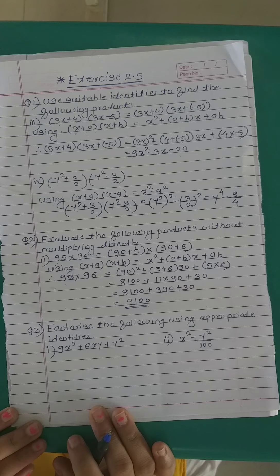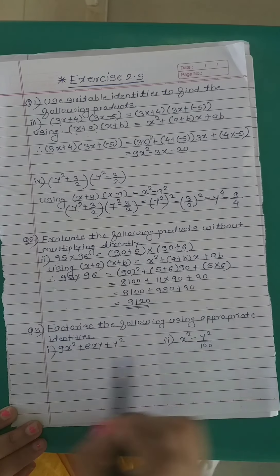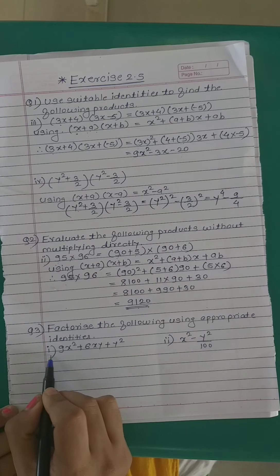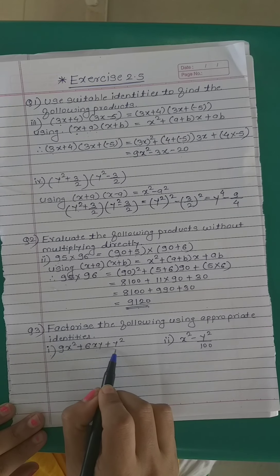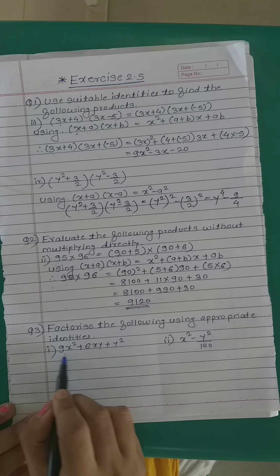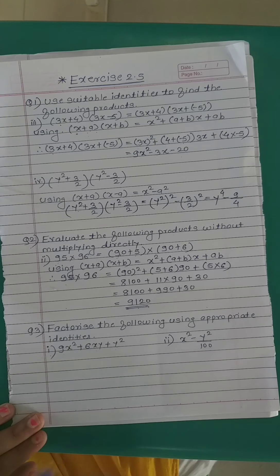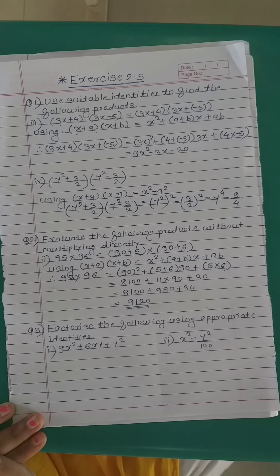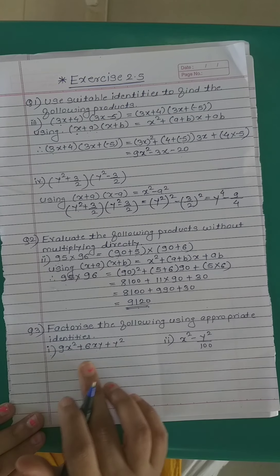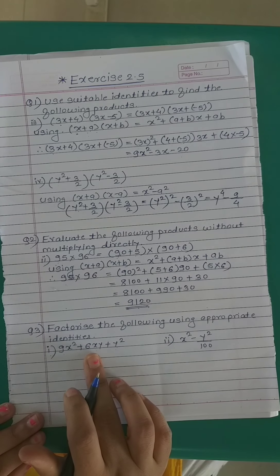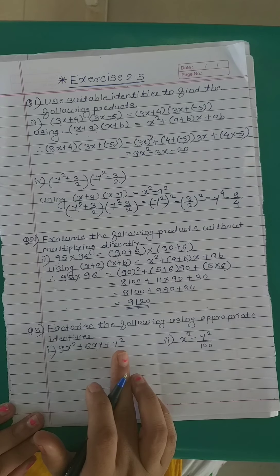Now factorize the following using appropriate identities. The first example is 9x² + 6xy + y². Here there is an algebraic expression and we have to factorize it. All of you know how to factorize this?